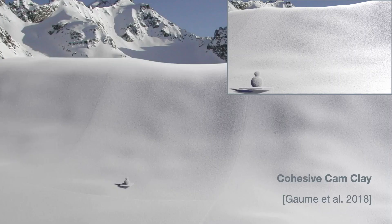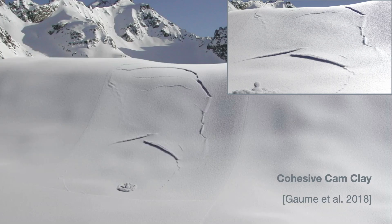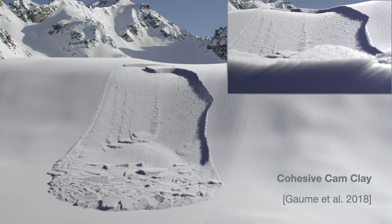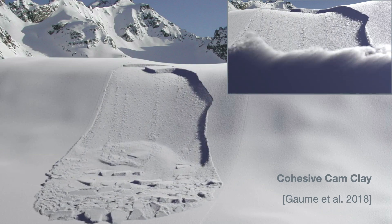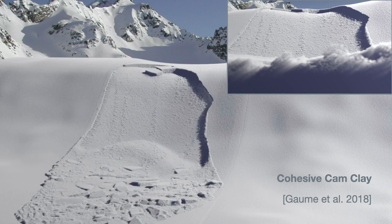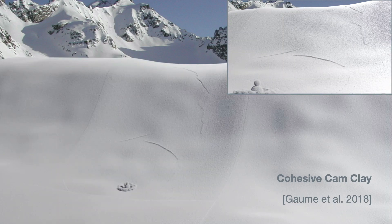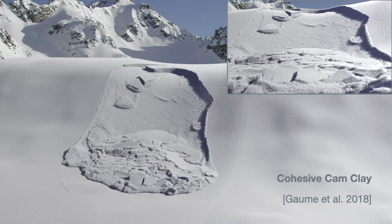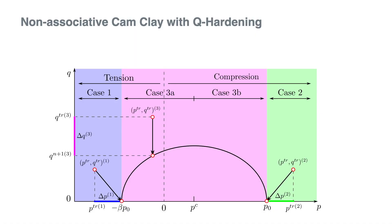For our ice plasticity model, we're inspired by the cohesive cam clay yield surface used in 2018 to dynamically simulate snow and avalanche mechanics. This work used an associative flow rule, which is suitable for snow due to the large volume changes induced by the porous structure. Ice, however, is far less porous than snow and experiences minimal volume change. Thus, we adopt a non-associative flow rule to model glacial calving with volume preservation.